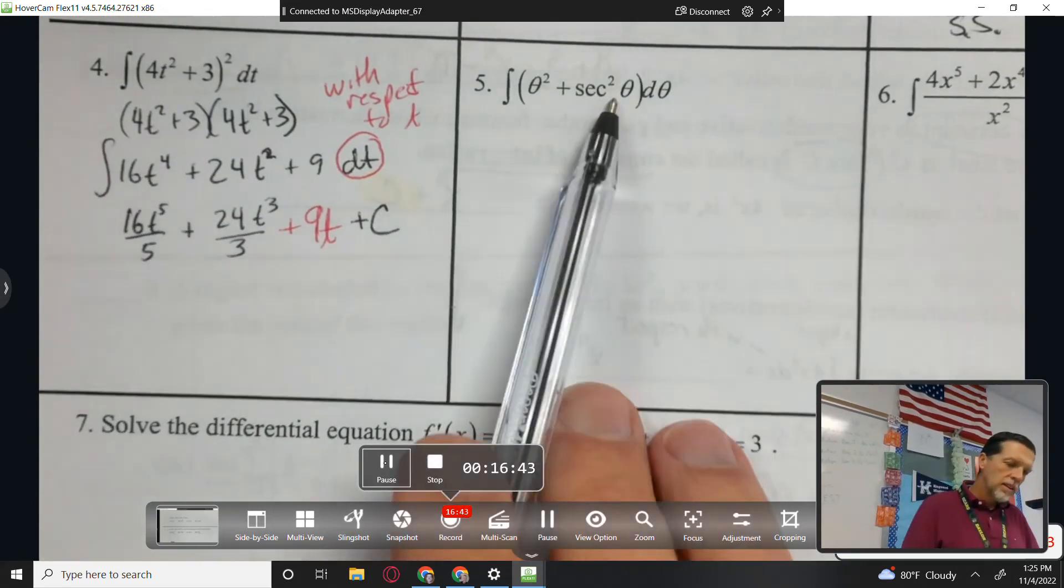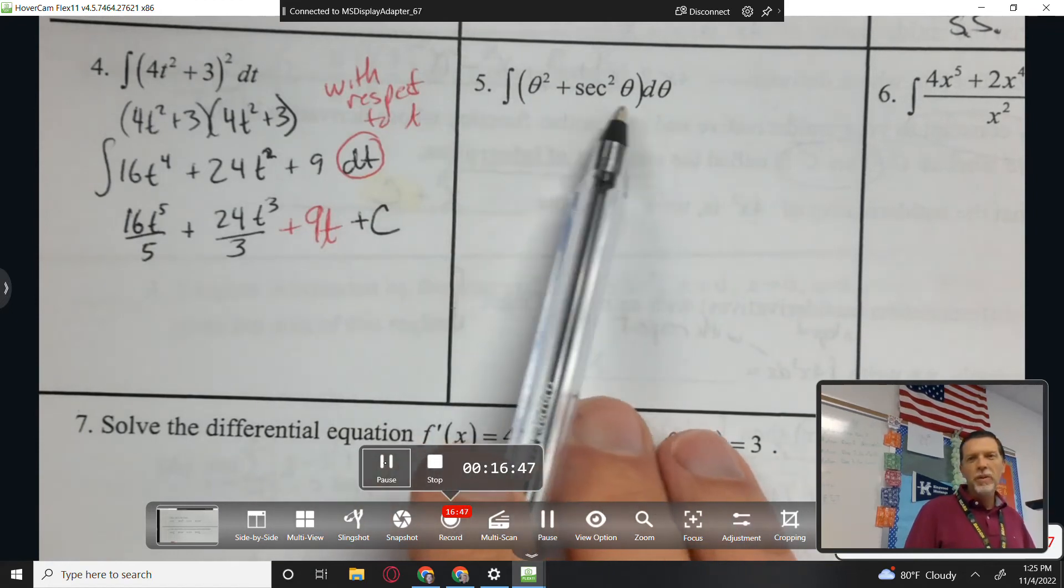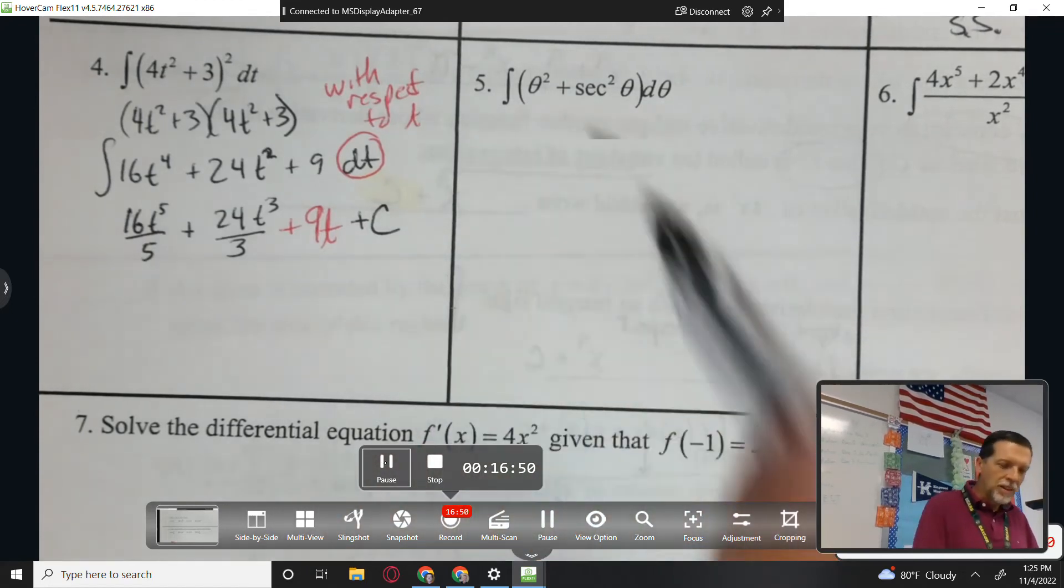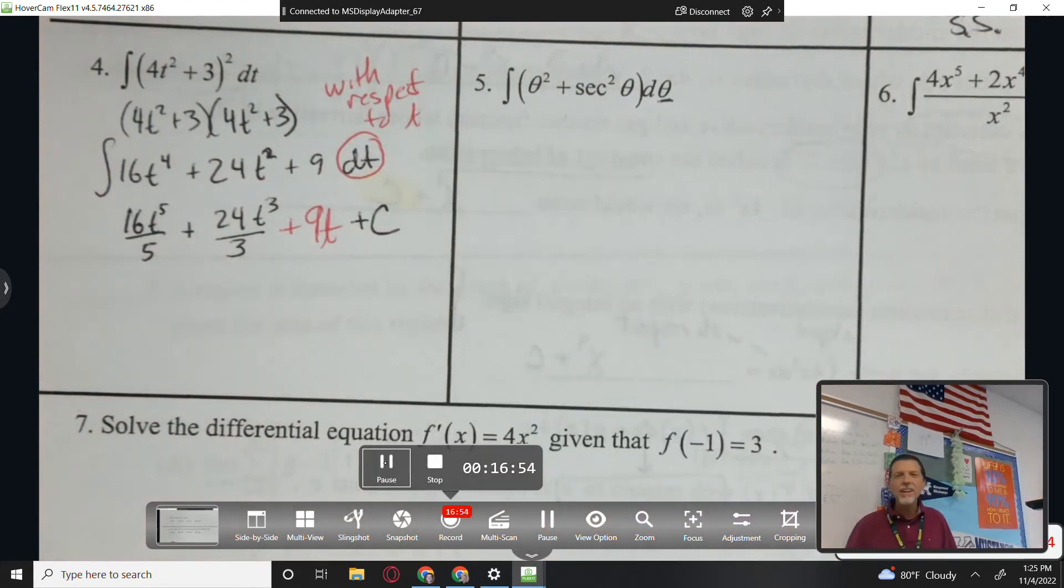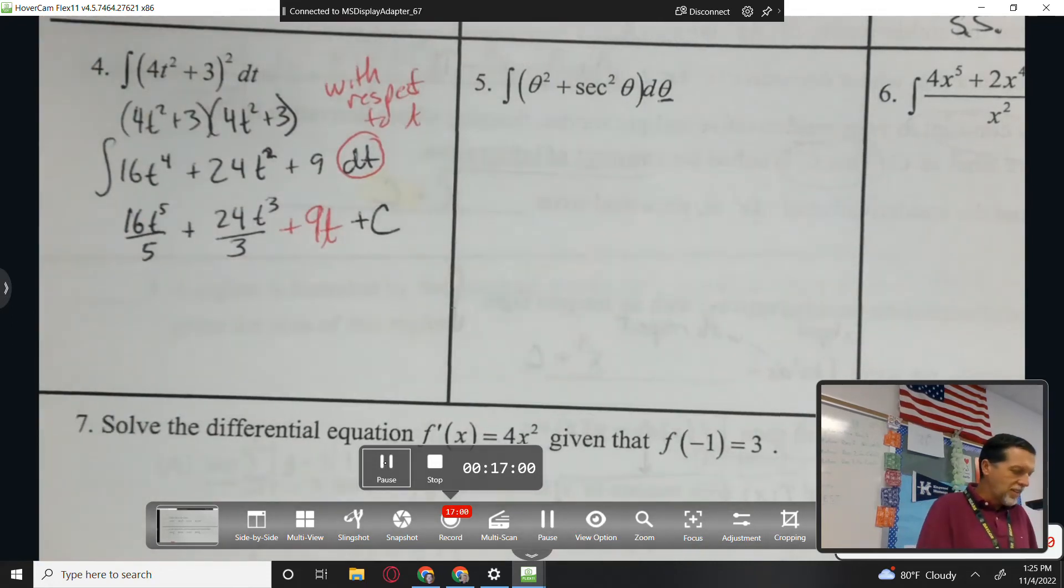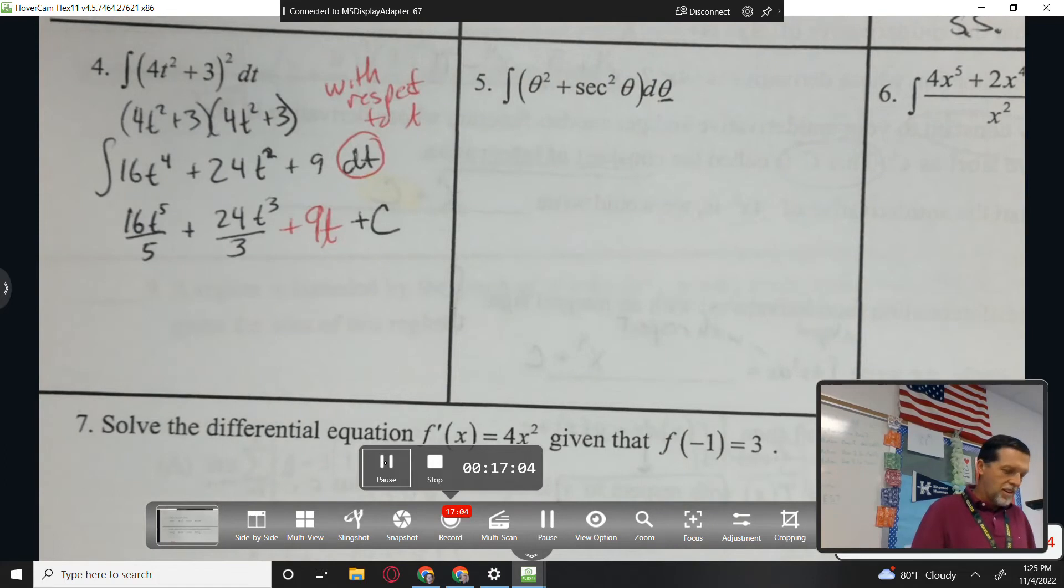Number 5. Thetas, which look weird, but it's okay. It doesn't matter. I mean, the variable we're antiderivitizing with is theta. So we'll just follow the same rules. So a little bit tricky, maybe, but it's the same rules. Too bad Landon's not here. Instead, we'll go to Isaiah.